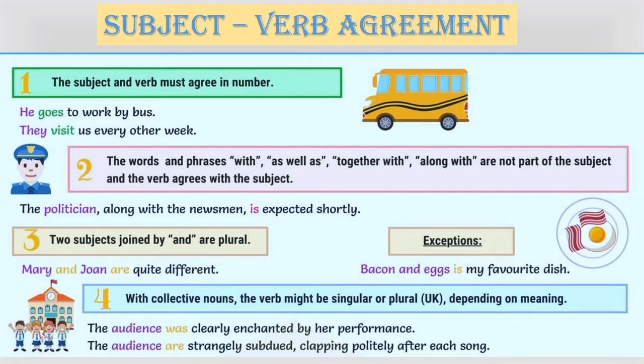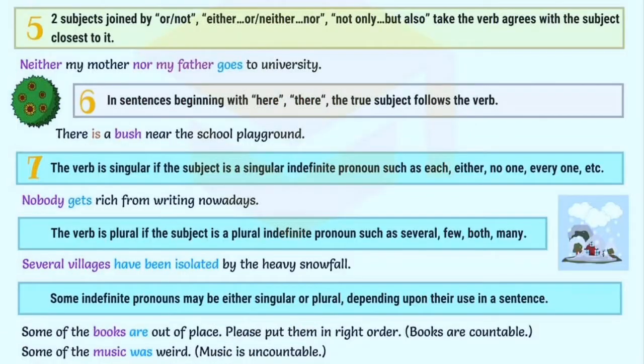The audience are strangely subdued, clapping politely after each song. Two subjects joined by 'or', 'not', 'either...or', 'neither...nor', or 'not only...but also' — the verb agrees with the subject closest to it. For example, neither my mother nor my father goes to university.